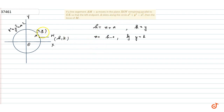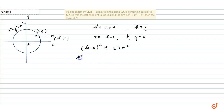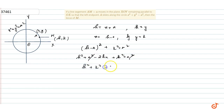Since point A lies on the circle x² + y² = a², substituting x = h − a and y = k gives (h − a)² + k² = a², which expands to h² − 2ah + a² + k² = a². Cancelling a² on both sides gives h² + k² − 2ah = 0.